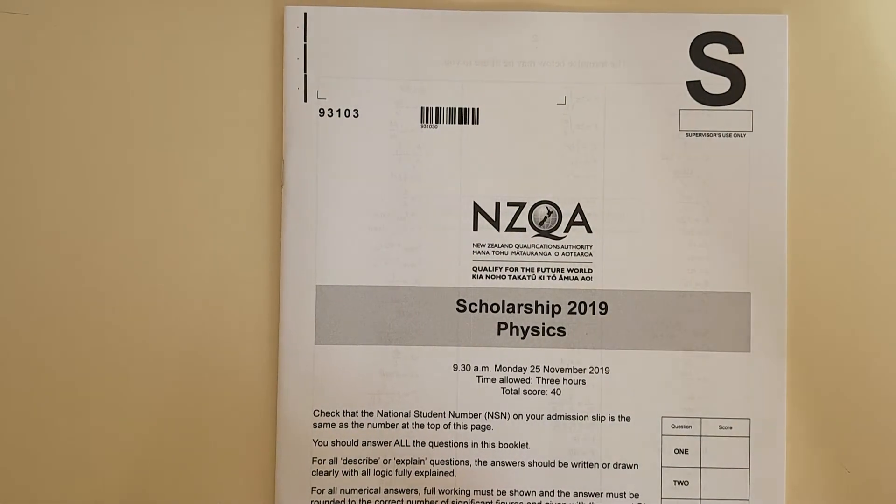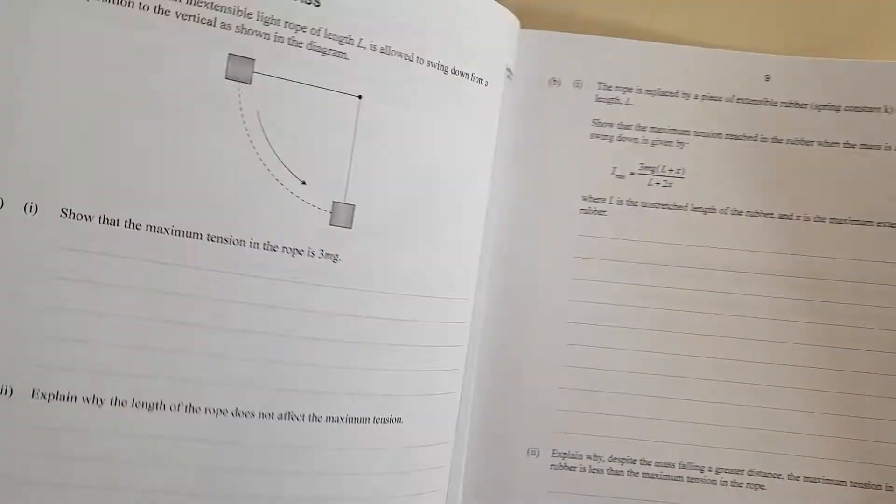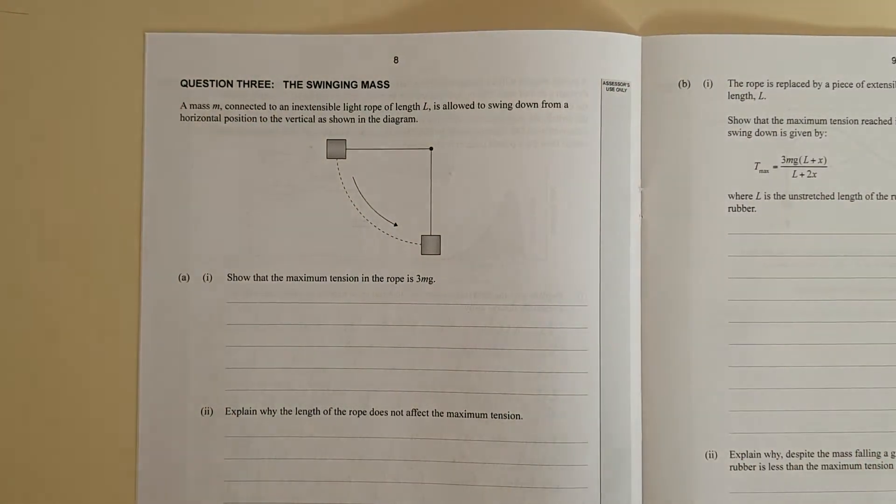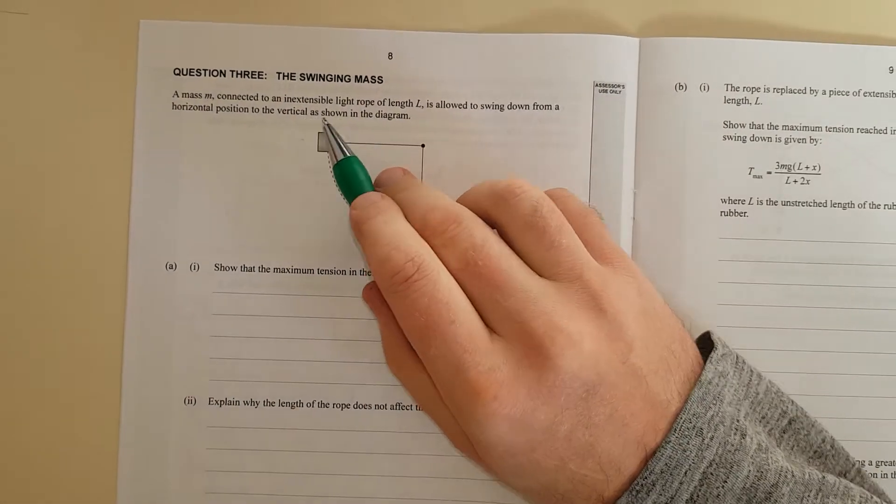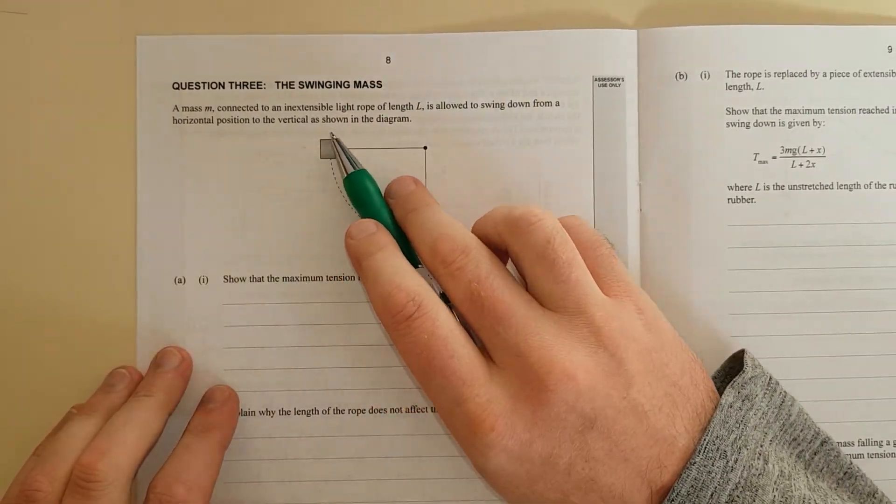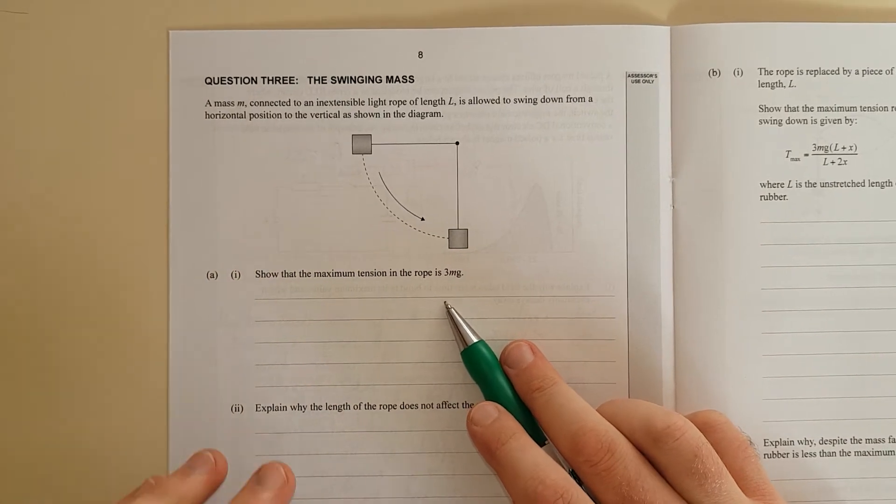This video is the 2019 scholarship exam, question 3. A mass M is connected to an inextensible light rope, it just can't stretch. The rope of length L is allowed to swing down from horizontal position to the vertical position shown in the diagram. Show the maximum tension in the rope is 3mg.